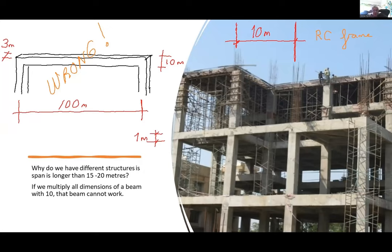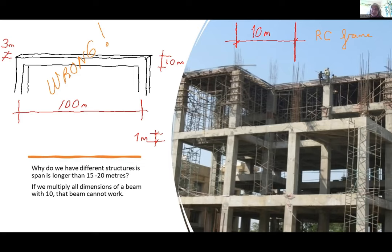This slide explains why we need different structures for long spans. On the right side you see a reinforced concrete frame under construction — the beam length is 10 meters and the depth is expected to be around one meter. But if I multiply all dimensions by 10 to achieve a 100-meter-long beam, it would be 10 meters deep and three meters wide — and this will not work. Don't think that if you take a structure and multiply all its dimensions by the same value, it will still work. That is a wrong way of thinking.